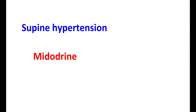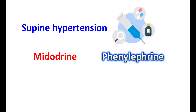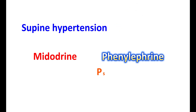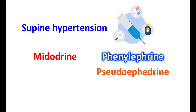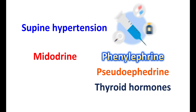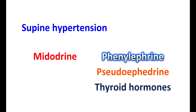Because of the risk of supine hypertension, Midodrine should not be given with other agents that increase blood pressure. Phenylephrine, an alpha-1 adrenergic agonist used for nasal decongestion in cough syrups, and pseudoephedrine work similarly and may produce significant hypertension when taken with Midodrine. Excessive levels of thyroid hormones or thyroid hormone supplements can also increase the risk of blood pressure elevation when taking Midodrine.